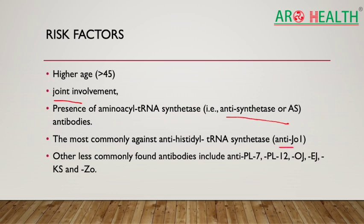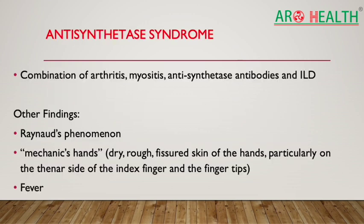Risk factors for pulmonary involvement include age greater than 45 and joint disease involvement. Anti-synthetase antibodies (aminoacyl-tRNA synthetase antibodies) are important, with anti-Jo1 (anti-histidyl tRNA synthetase) being the most common. When arthritis, myositis, anti-synthetase antibodies, and ILD occur together, it is called anti-synthetase syndrome. Additional features may include Raynaud's phenomenon, mechanic's hands (dry fissured hands), and fever.